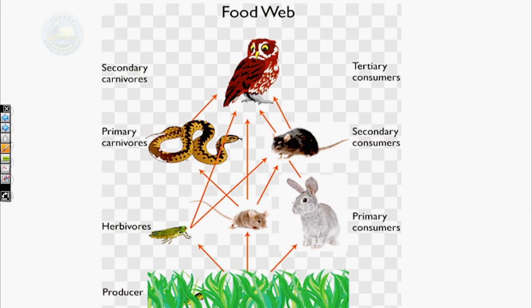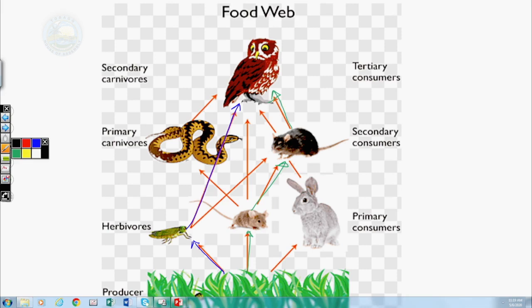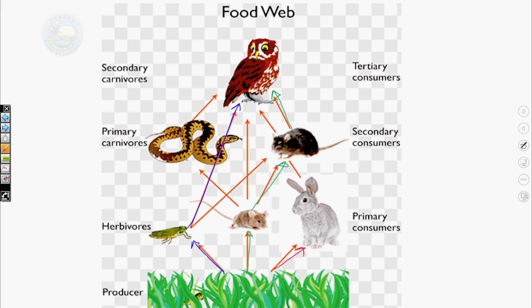A food web is made up of several interconnecting food chains. For example, grass eaten by grasshopper, which is then eaten by an owl — that is one food chain. Another: grass eaten by mouse, who is eaten by a rat, who is then eaten by the owl. Another: grass eaten by rabbits, which is then eaten by the owl. So you are seeing several interconnecting food chains making one food web.